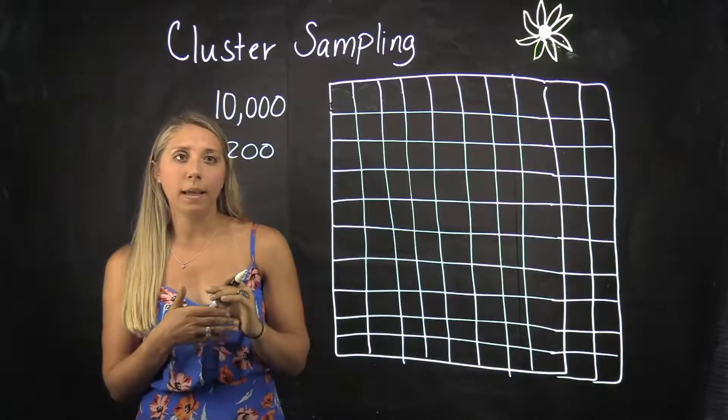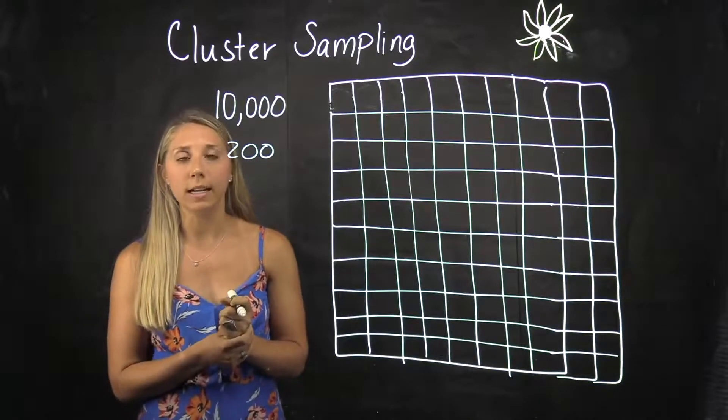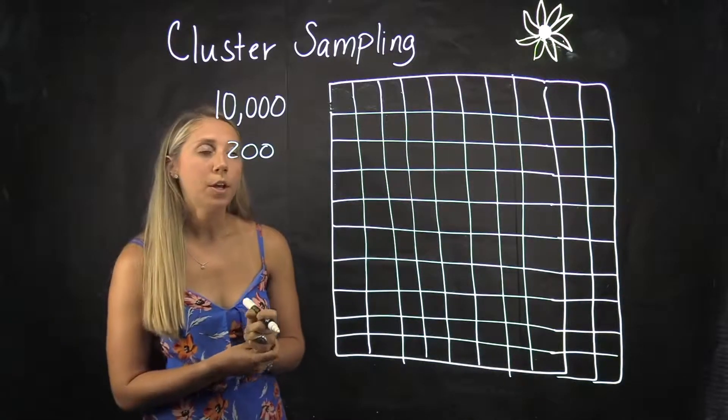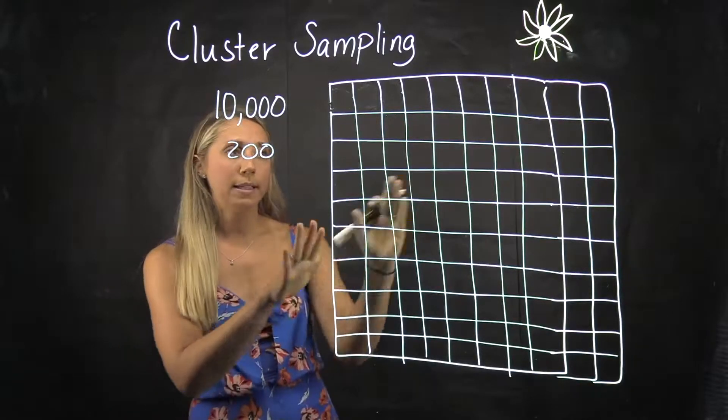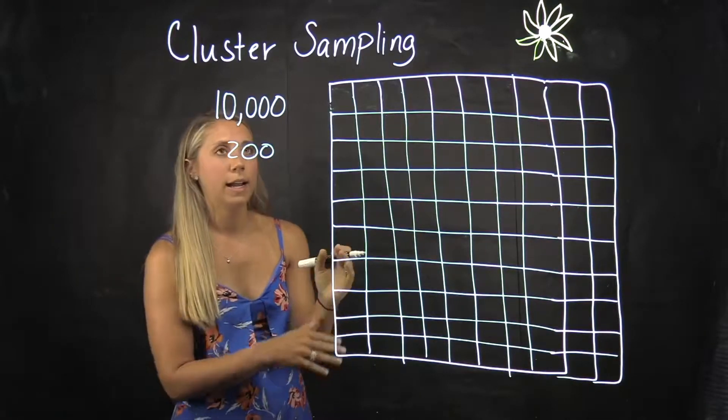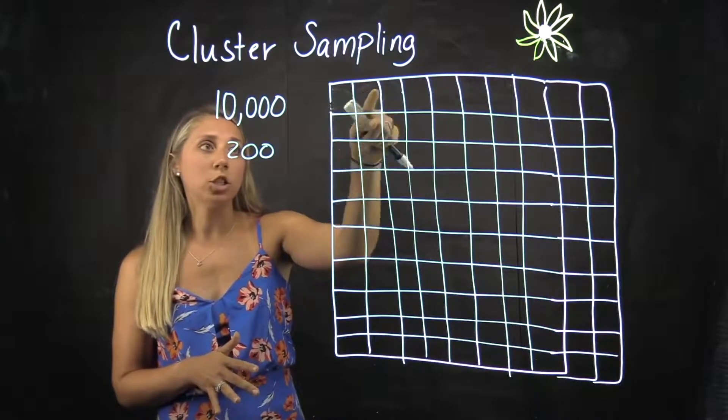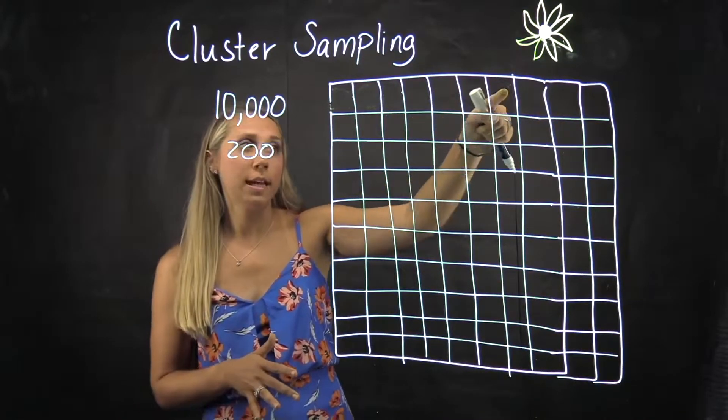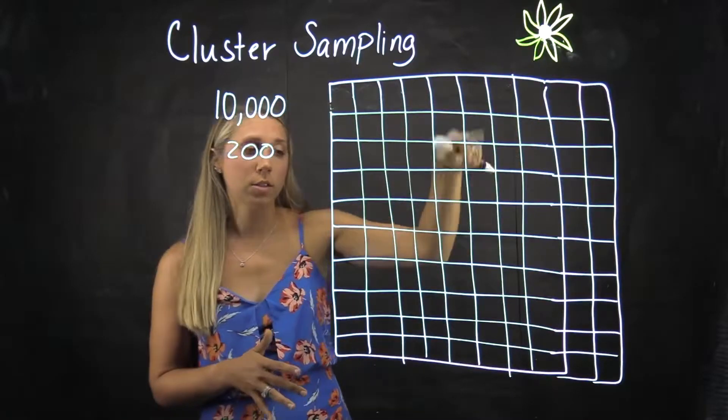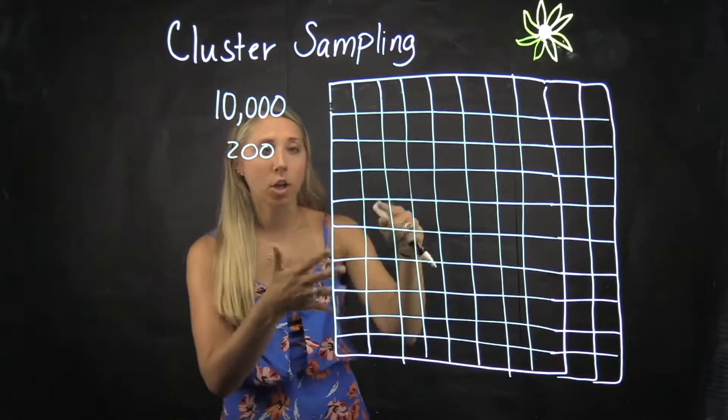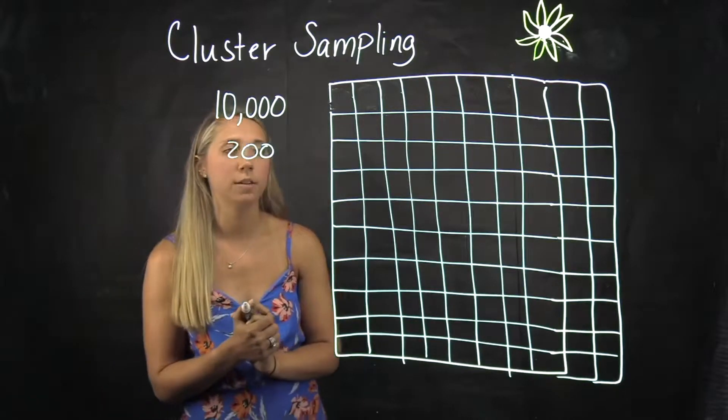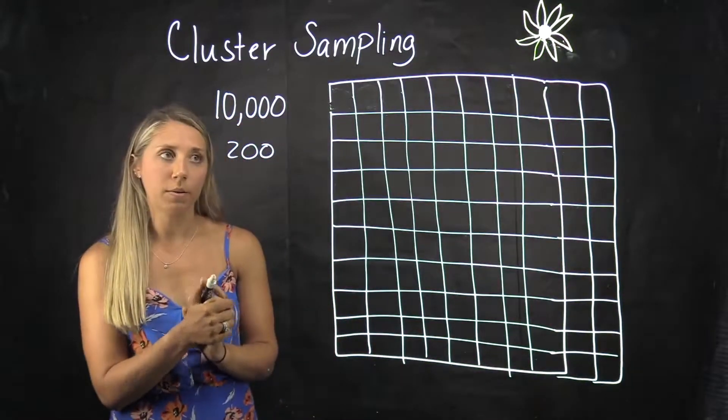Something that might be a great deal of convenience here is a cluster sample. So what we would do is this is once again a grid of the plots of sunflowers, and in each square here we're saying there's 100 sunflowers. So there's 100 plots, there's 100 in each, so that would give us our population of 10,000 sunflowers.